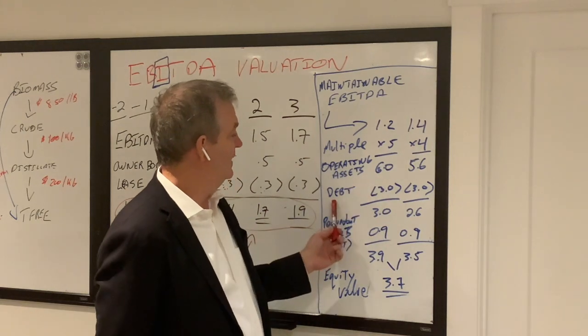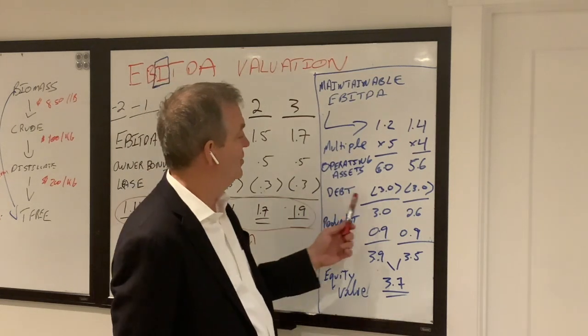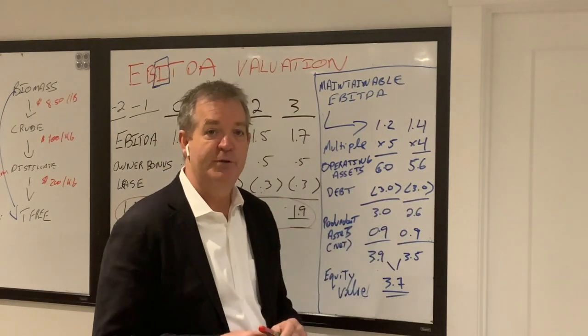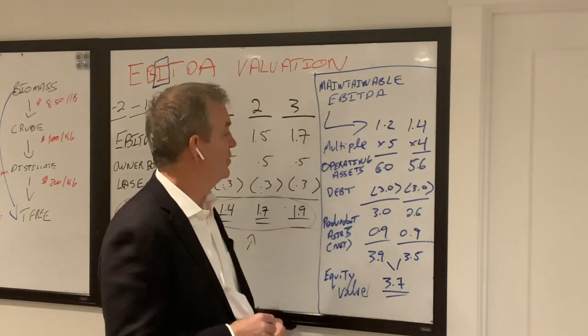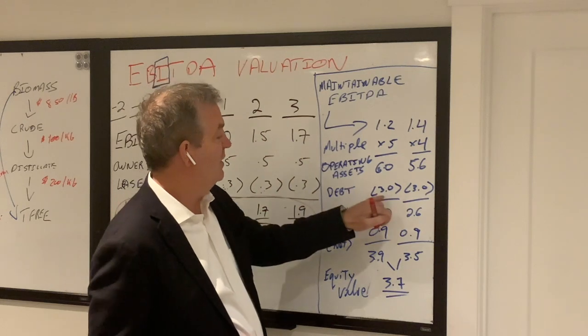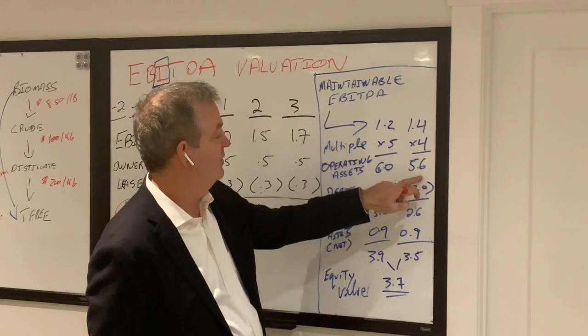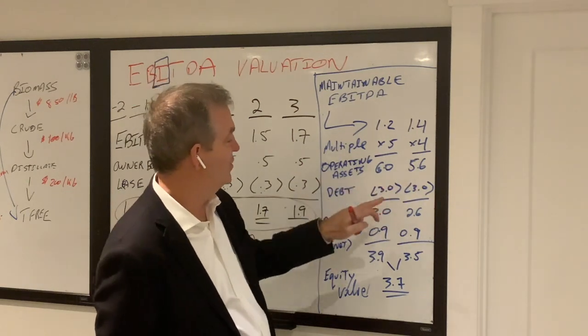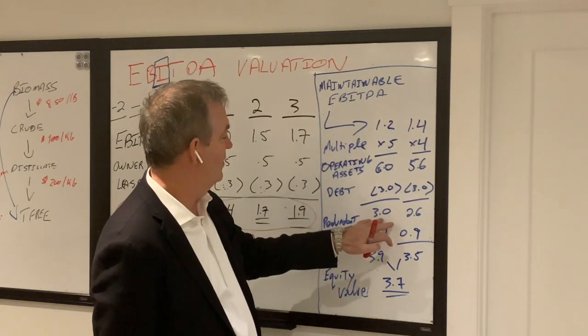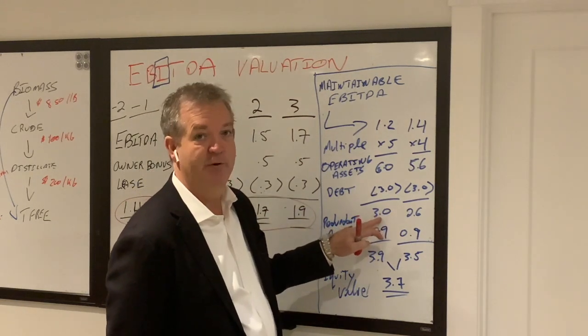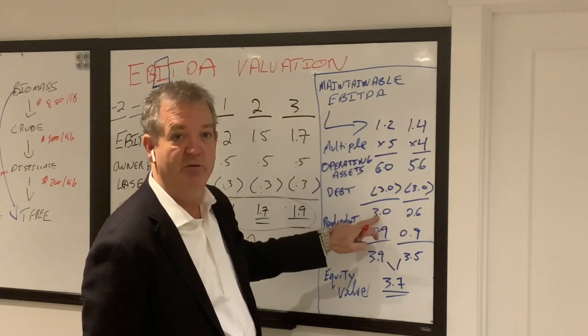So now in an EBITDA valuation, here's what most lay people, business people who are not valuators forget, is you have to deduct your interest bearing debt. What interest bearing debt? All of your interest bearing debt. There's some nuance on that but it's beyond the scope of this. I've assumed that you have in your business 3 million dollars of debt. So the value of the operating assets would be 6 million to 5.6 million or vice versa. Take off the debt of 3 million and you end up with the value of your operating assets less your debt being in the range of 2.6 to 3 million dollars.